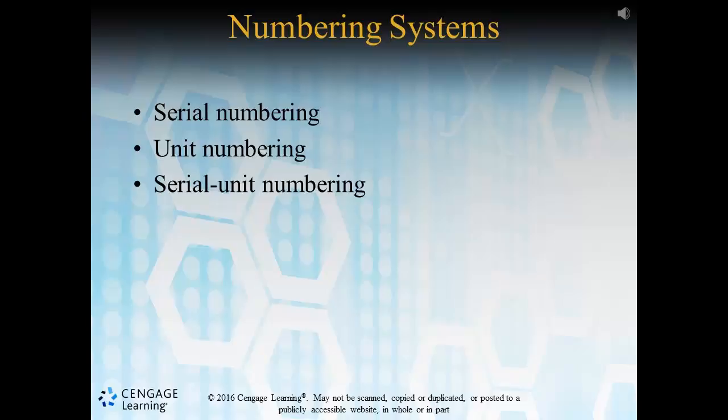Unit numbering systems dictate that a patient remain with a single numeric identifier throughout all healthcare visits. The serial-unit numbering system is somewhat of a marriage between the previously mentioned systems. Patients under this system will receive a new number each visit, but all other records are transferred to this current encounter.